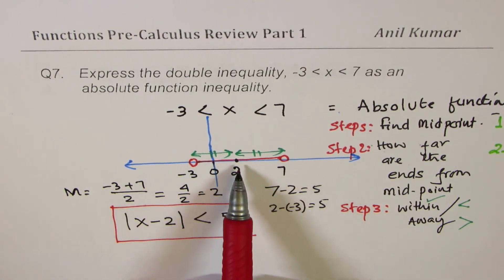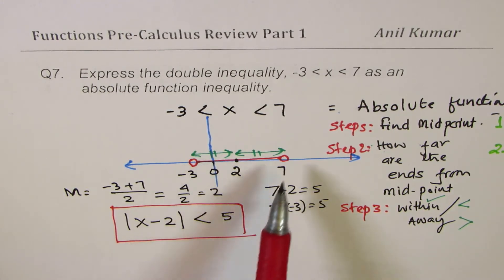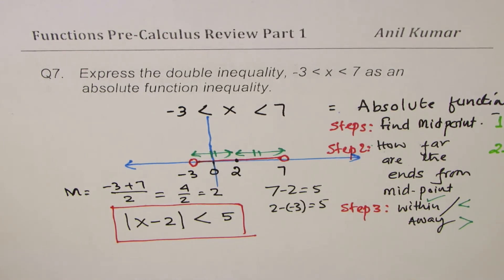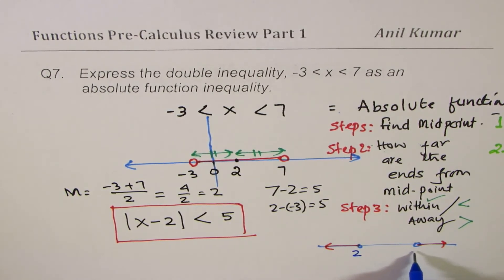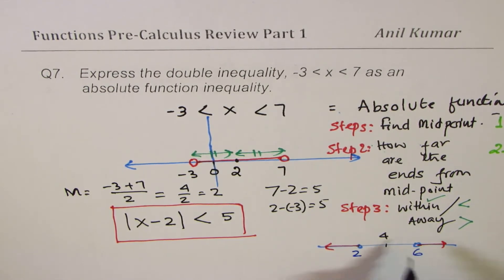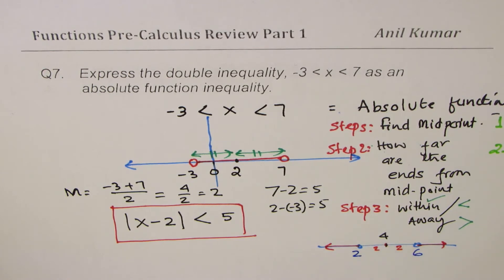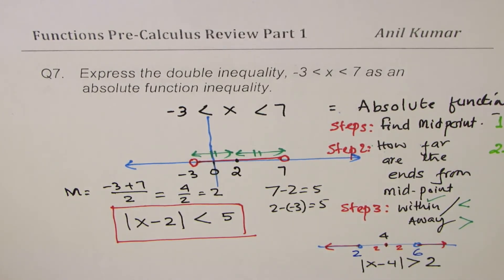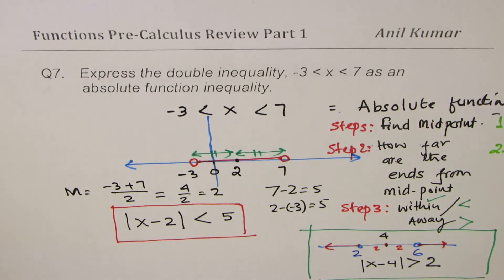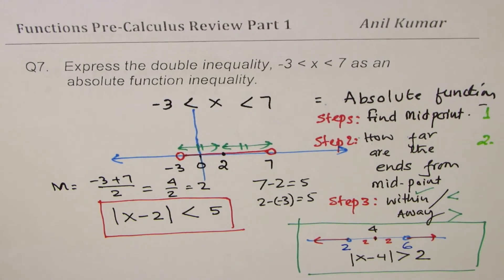To summarize: find the midpoint, find the distance from the midpoint, and decide within (less than) or away (greater than). For example, if x is outside the interval between 2 and 6, the midpoint is 4 and distance is 2, giving |x - 4| > 2. I hope this makes sense.